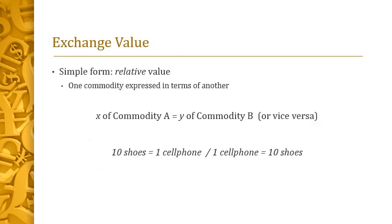Where does exchange value come from? The simplest form of exchange value is relative value — one commodity expressed in terms of another. X number of commodity A equals Y number of commodity B. So we have something like: 10 shoes equals 1 cell phone, 1 cell phone equals 10 shoes. By equating these two to each other in terms of their relative value, now we can trade.